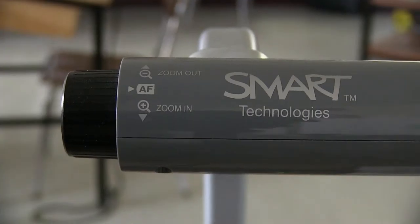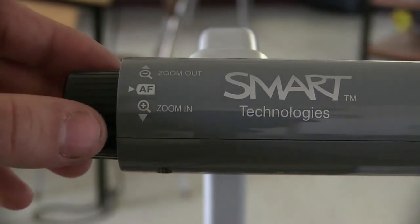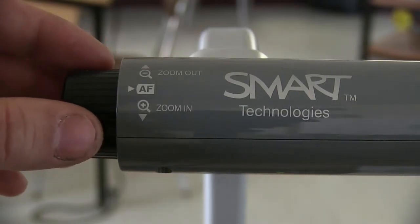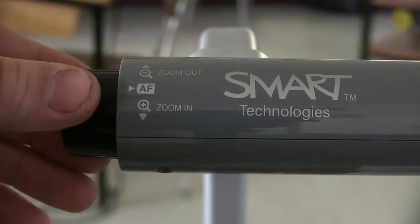To zoom in and out on the camera to enlarge a document or an object for the student, you simply turn this black knob down to zoom in and up to zoom out.